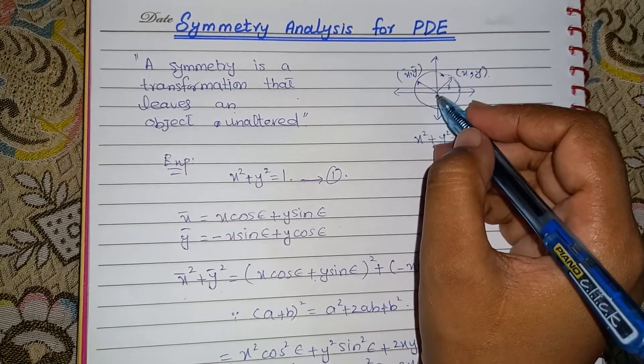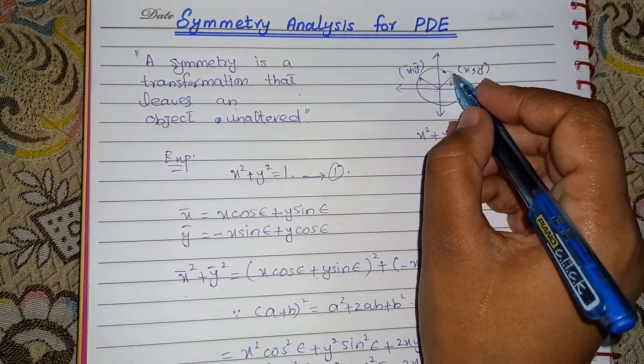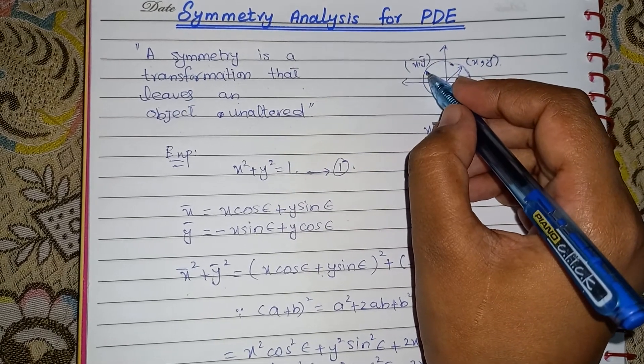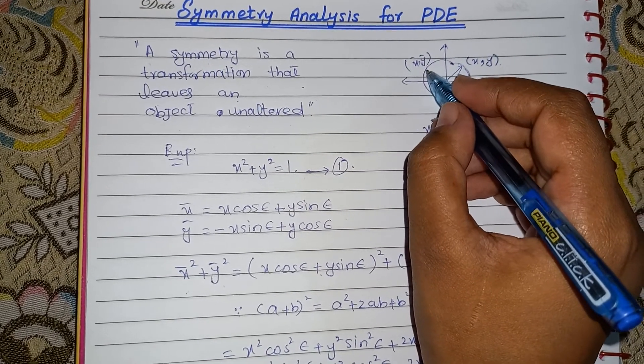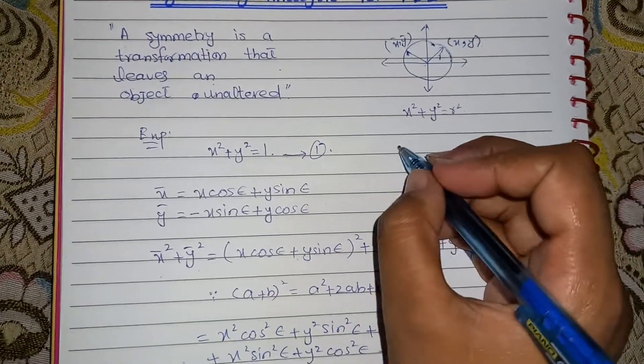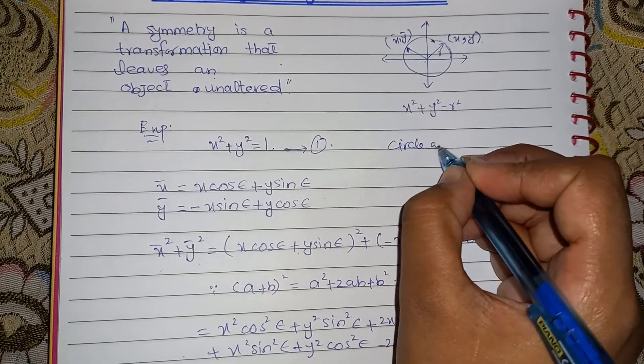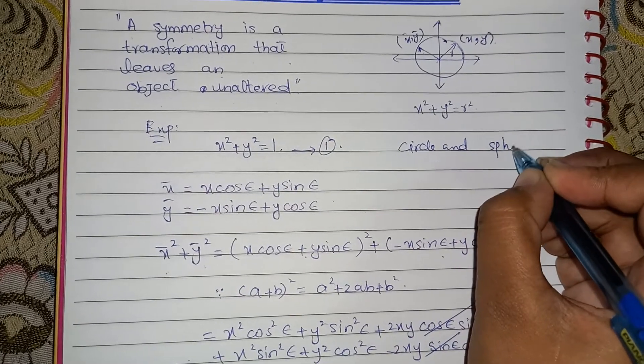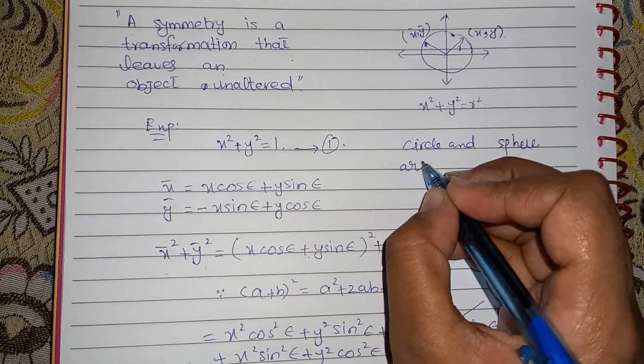So in a circle, if we take a point here, the transformed point will lie on the same circle. So in this way, we will say that a symmetry exists in a circle, or we can also say circle and sphere are perfectly symmetric.